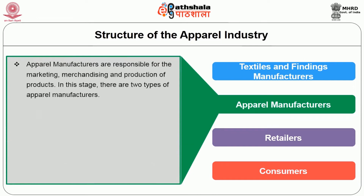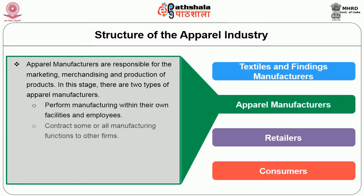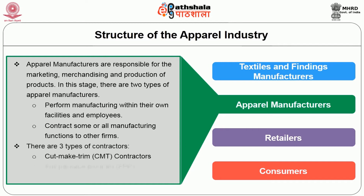Stage 2: Apparel manufacturer. Apparel manufacturers are responsible for the marketing, merchandising, and production of products. In this stage, there are two types of apparel manufacturers: those who perform manufacturing within their own facilities and employees, and those who contract some or all manufacturing functions to other firms. There are three types of contractors: cut, make, and trim contractor; full package program; and specialty contractors.